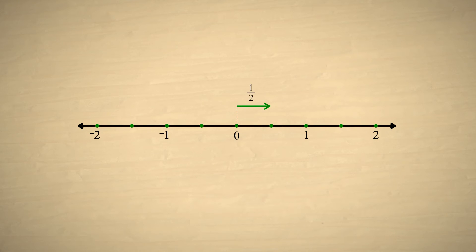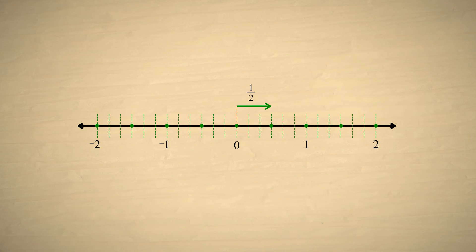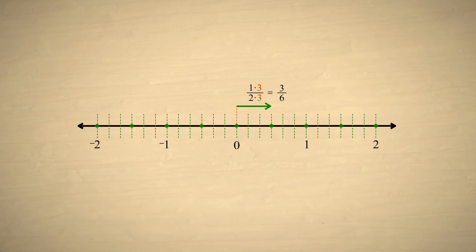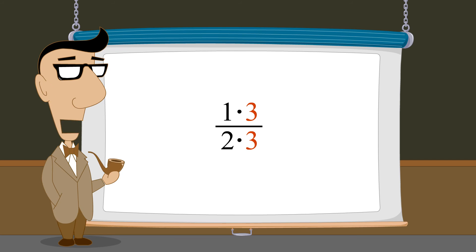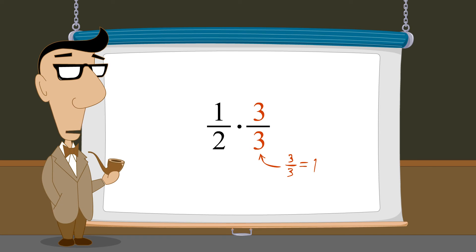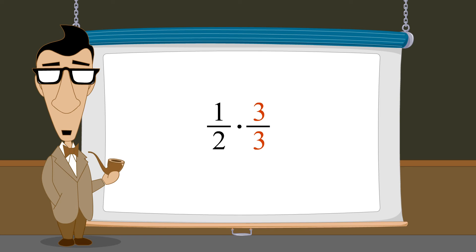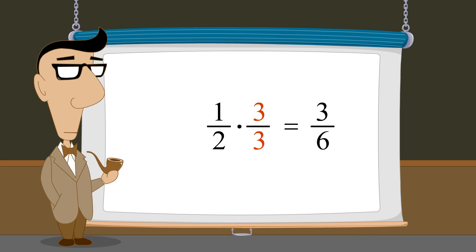Likewise, we took the fraction one-half and split each division on the number line into three pieces. There were then three times as many divisions per unit length, so we had to multiply the denominator by three. The fraction one-half then represented three times as many of these new divisions, so we also had to multiply the numerator by three. So this new equivalent fraction was created by multiplying both the numerator and the denominator by three. Multiplying the numerator and denominator of a fraction by the same number doesn't change its value, since it is the same as multiplying the entire fraction by one. And it is this trick which will allow us to change any fraction into an equivalent fraction with a different denominator.